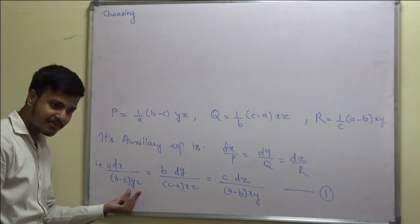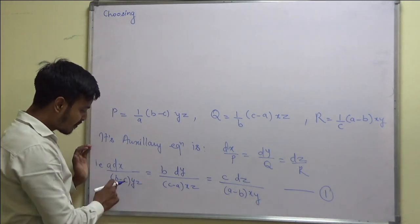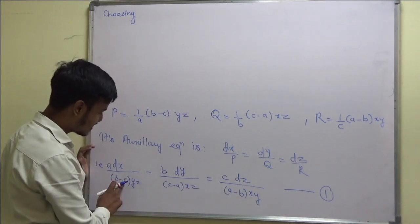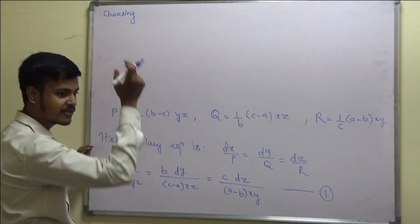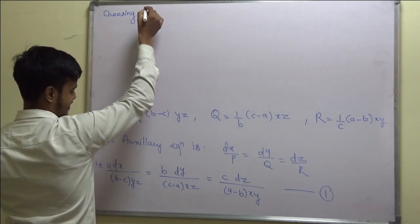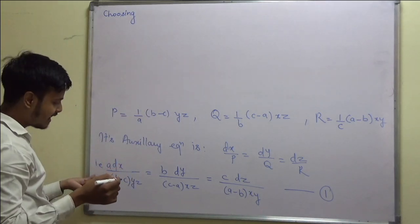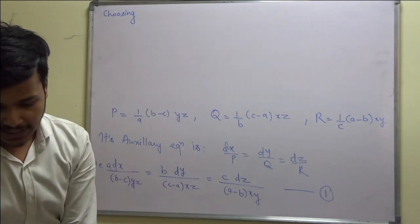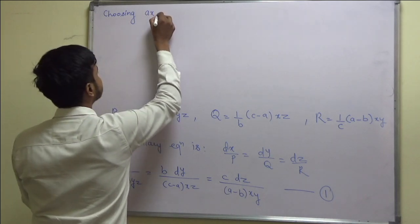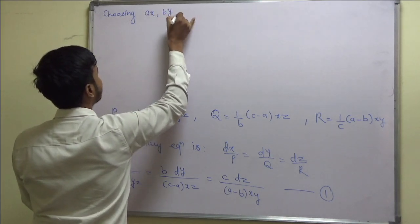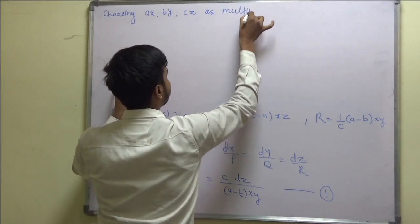If I multiply by x, y, z: taking x, y, z common, we get terms like (b − b) + (c − c) + (a − a) = 0, so the denominator sum is 0. Therefore my multipliers are ax, by, cz. Each fraction of equation 1 equals (ax dx + by dy + cz dz) upon the denominator.